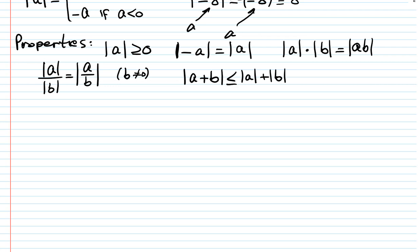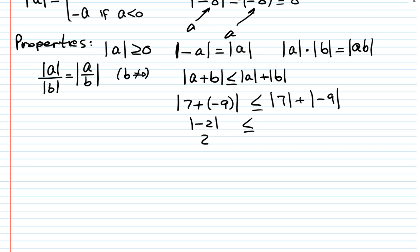There is also the triangle inequality: the absolute value of (a + b) is less than or equal to the absolute value of a plus the absolute value of b. For example, the absolute value of (7 + (−9)) equals the absolute value of −2, which is 2. Separately, the absolute value of 7 is 7 and the absolute value of −9 is 9, so 7 + 9 = 16. And indeed 2 is less than or equal to 16.